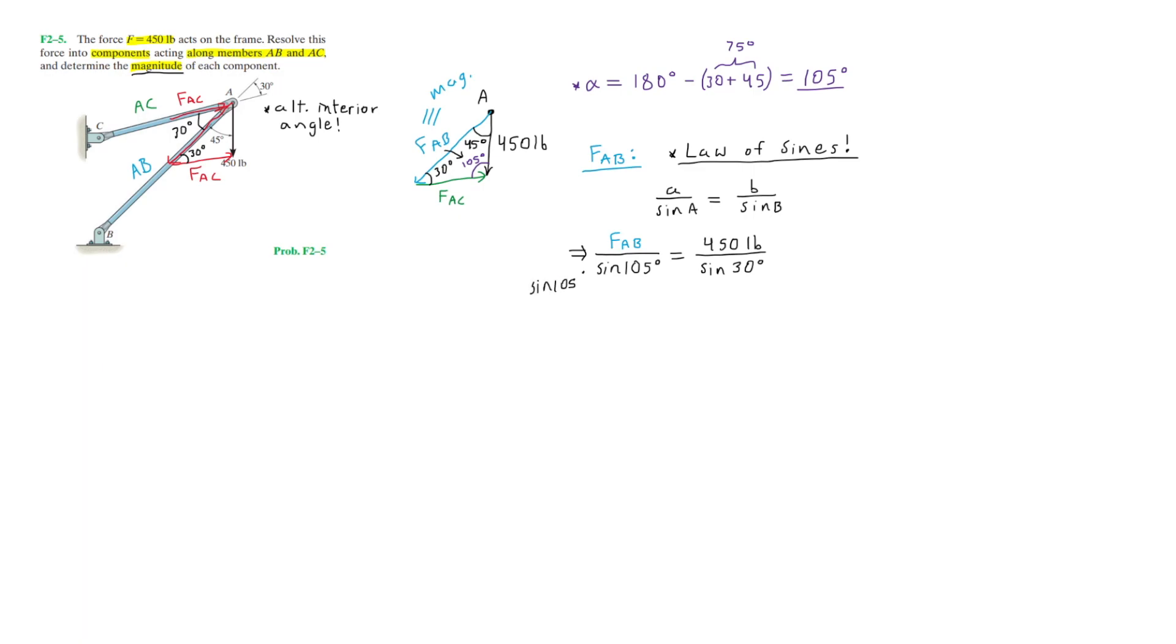By simply multiplying sine of 105 to the right side to isolate FAB, we have FAB is equal to multiplying and dividing the right side, we are left with roughly 869.33. So our force AB is equal to 869.33 pounds.